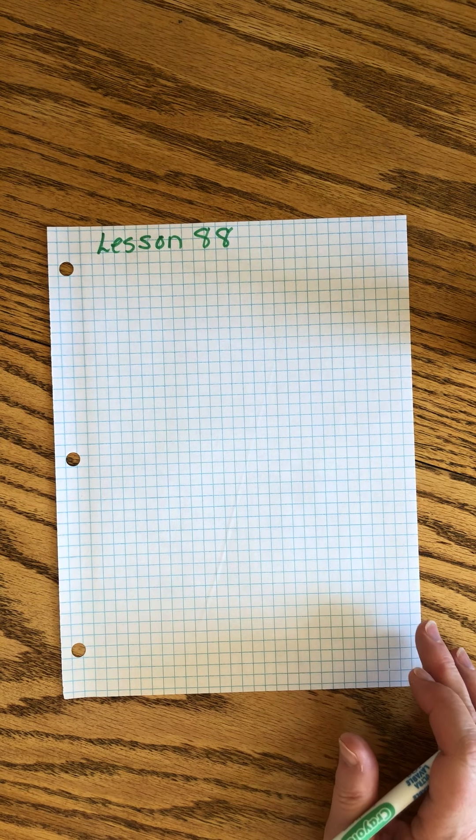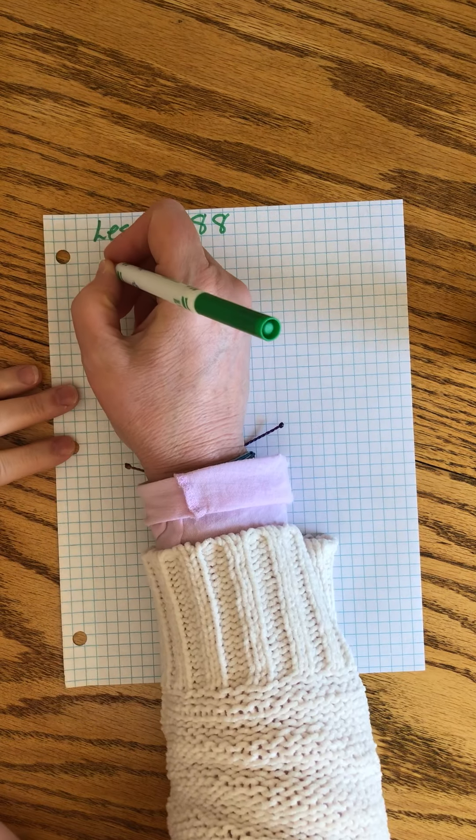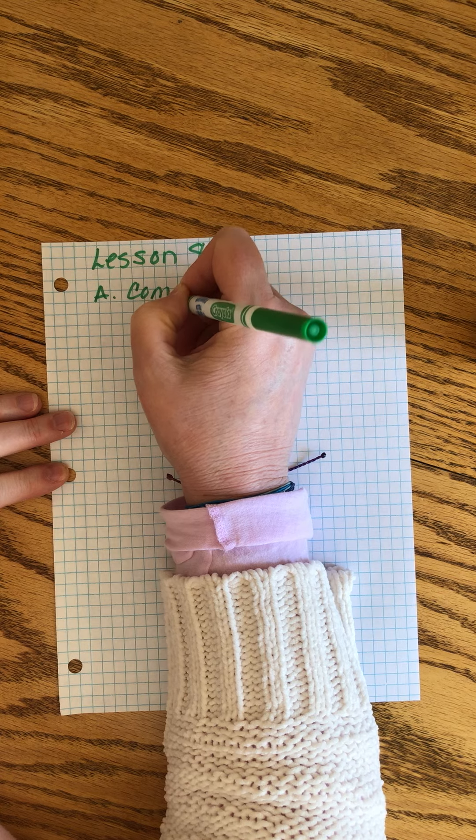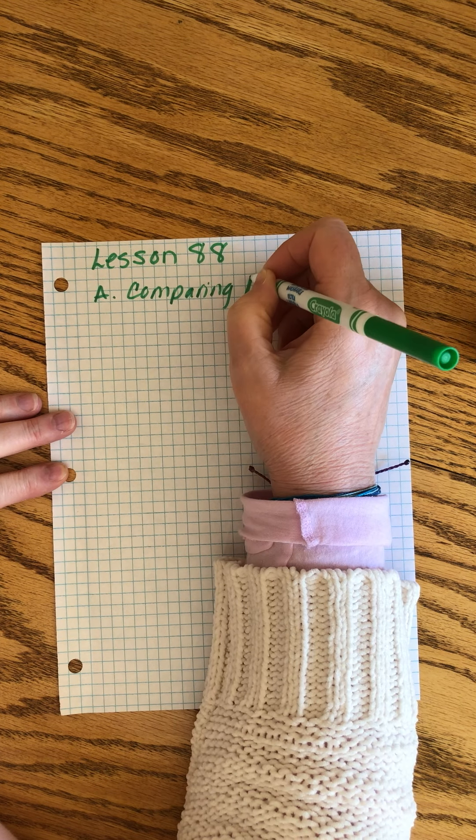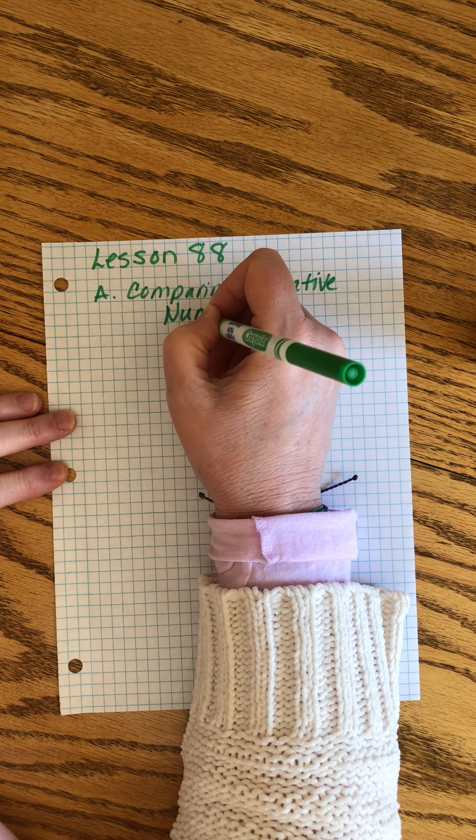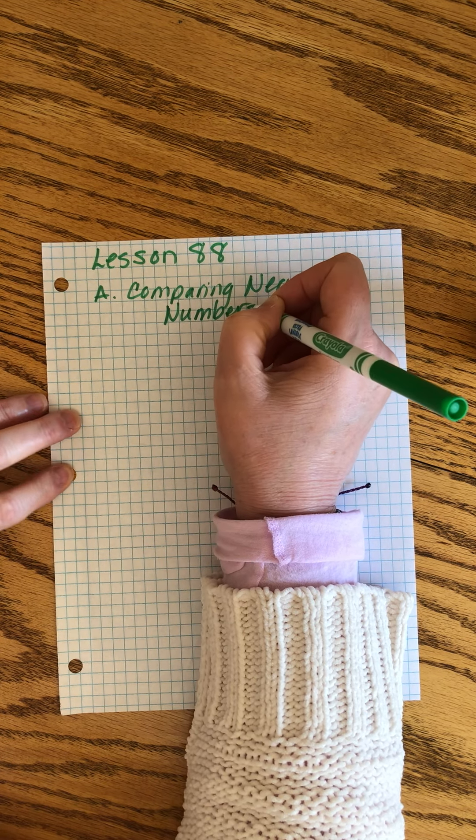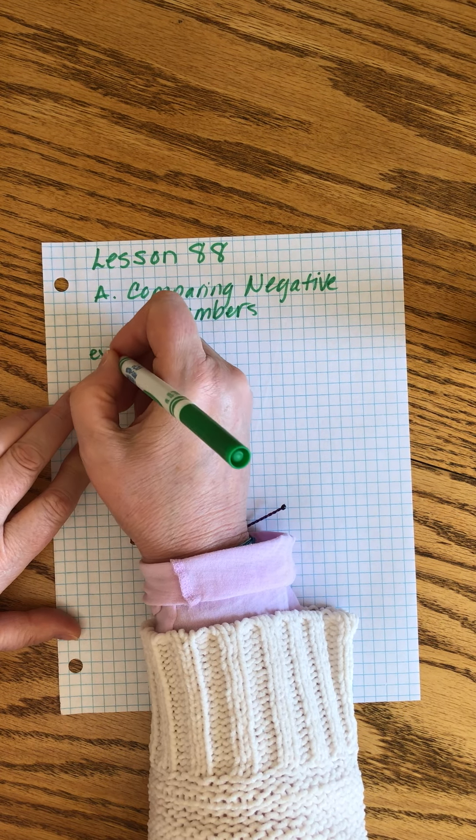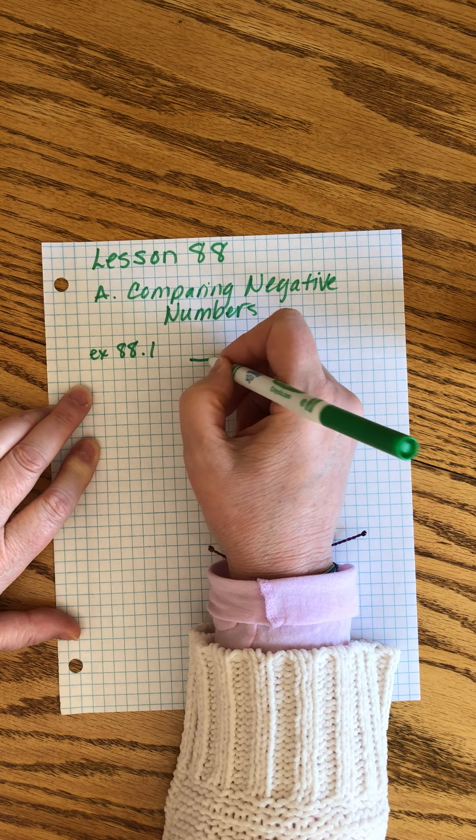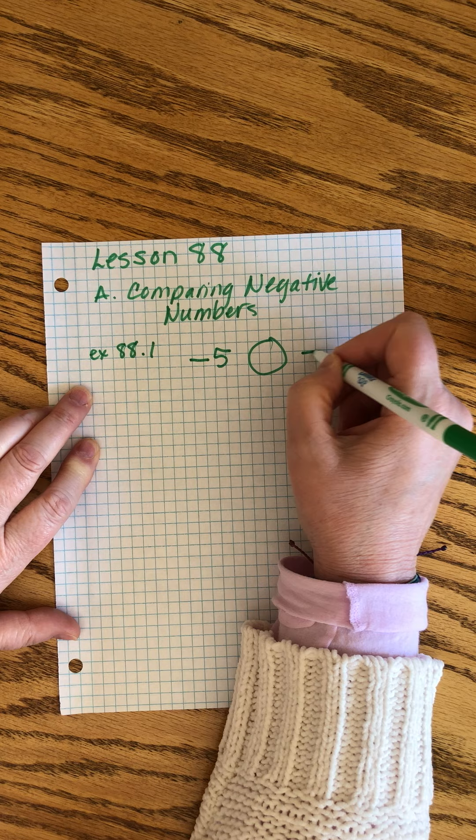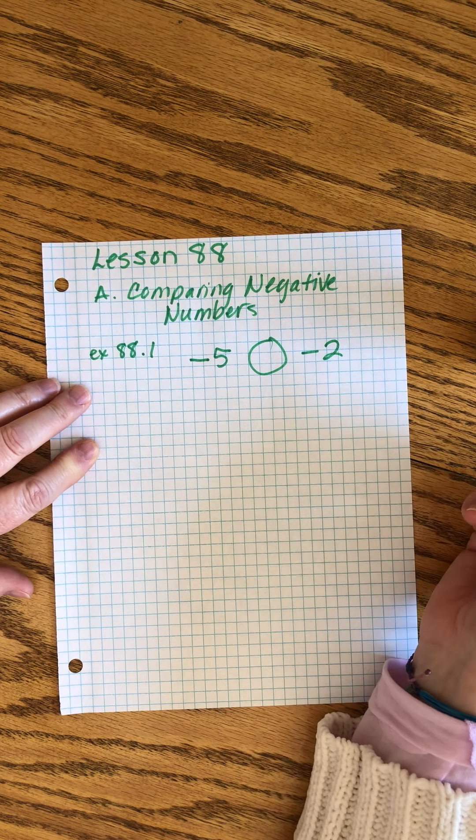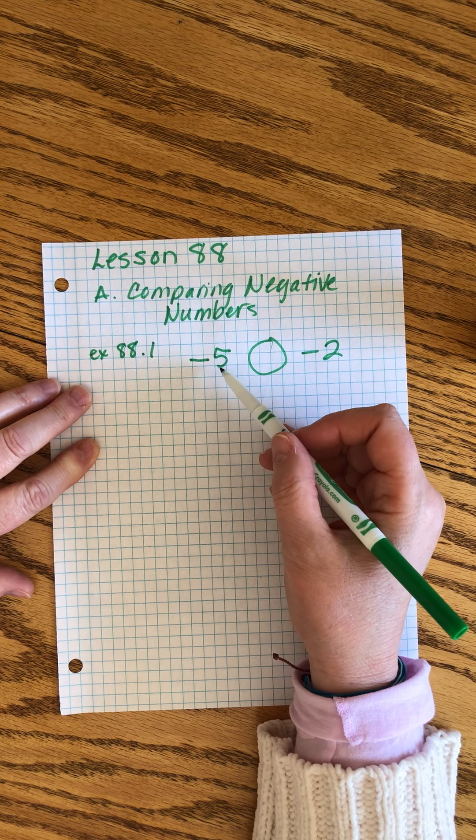Saxon math 7-6, lesson 88, a two-parter. The first part is comparing negative numbers. We're talking about something like this: compare negative 5 is greater than or less than negative 2. It's confusing because we're used to 5 being greater than 2.